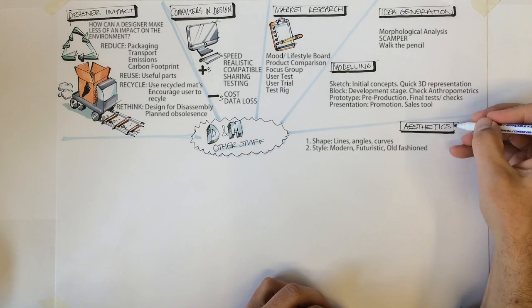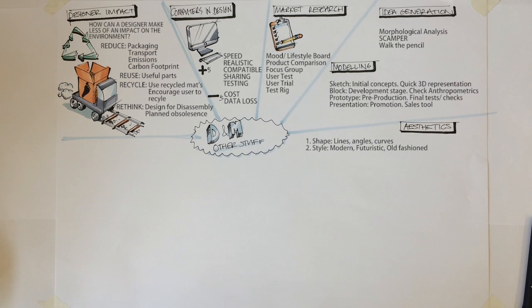Two: Style. Is it modern, futuristic, old fashioned, etc.? Link this to the appeal to the consumer. For example, some people like old fashioned looking products.